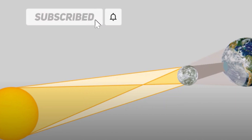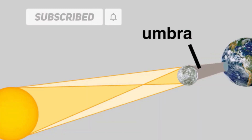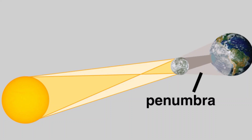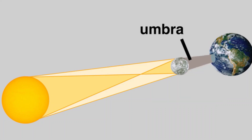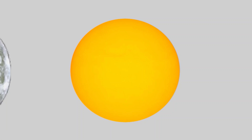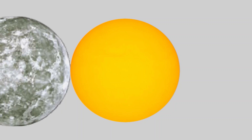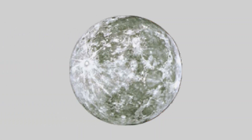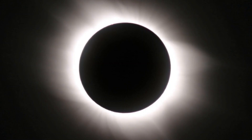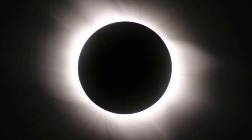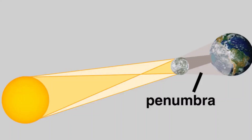This shadow consists of two parts: the umbra and the penumbra. The umbra is a total shadow. To observers on Earth within the narrow strip of land over which the umbra passes, the sun appears to be completely covered by the moon — those observers see a total eclipse. The penumbra is a partial shadow.